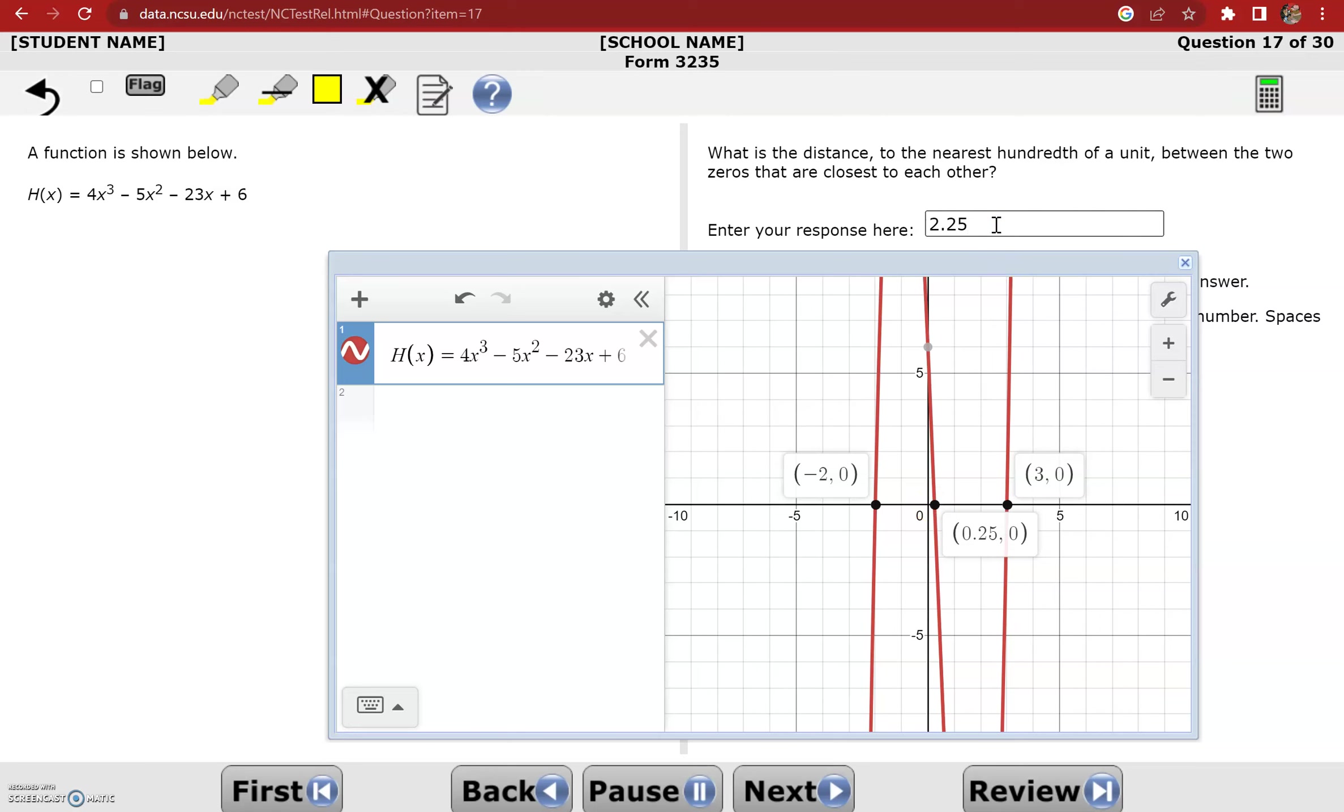So that's a total distance traveled of 2.25. If the question said, what is the distance between the two zeros on the right? Well, then that would have been 2.75. But it says between the two that are closest to each other, so we're looking at 2.25 there.